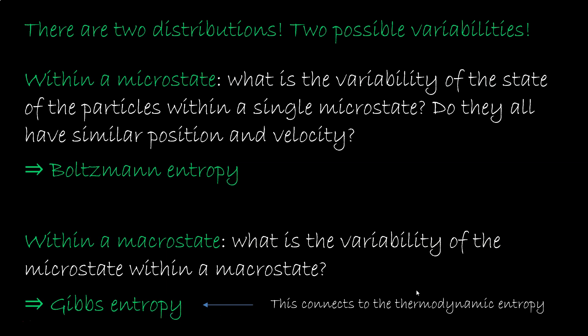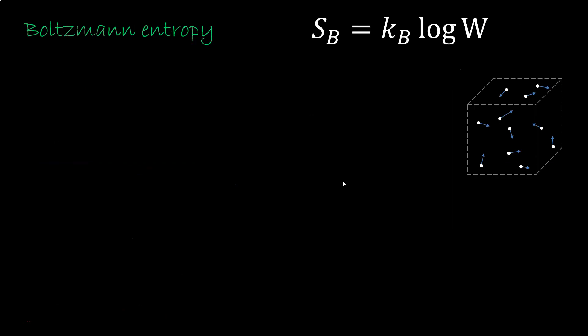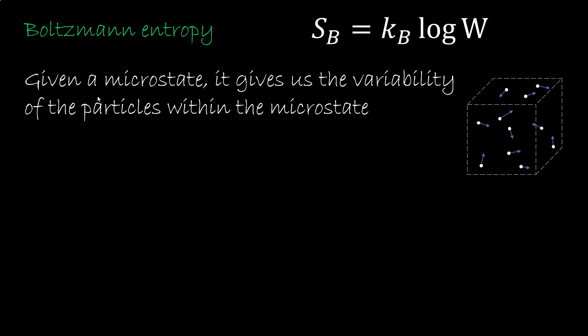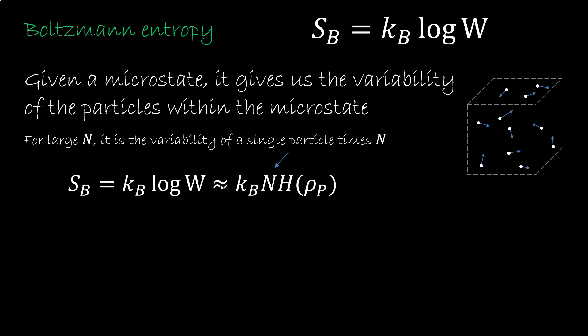So let's start with the Boltzmann entropy, kb log w. Given a microstate, it tells us the variability of the particles within the microstate. For large n, this is approximately equal to the variability within the distribution of our particle states, rho, times the number of particles. The factor of n makes physical sense, because the entropy is an extensive quantity. In fact, the normalized distribution rho would not change as n increases, so h of rho remains the same. If it is multiplied by n, it becomes an extensive quantity.